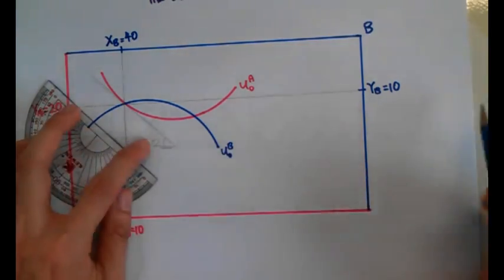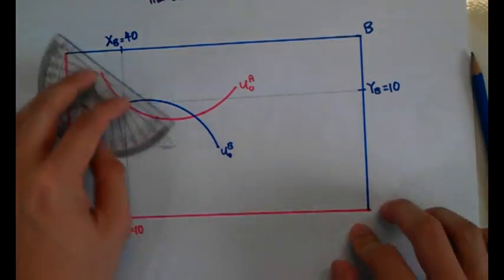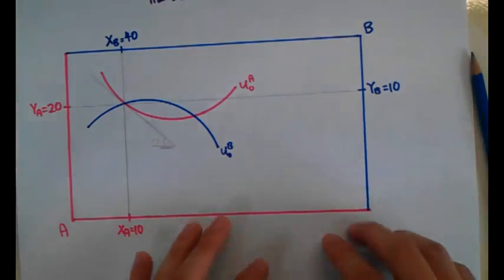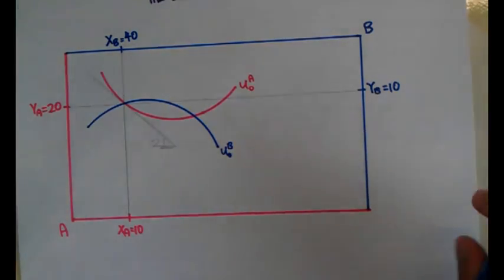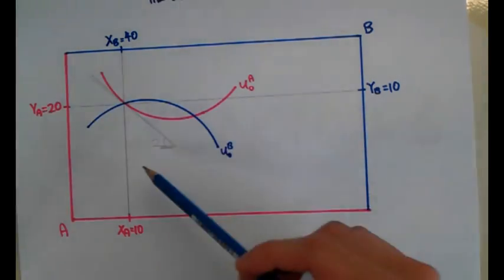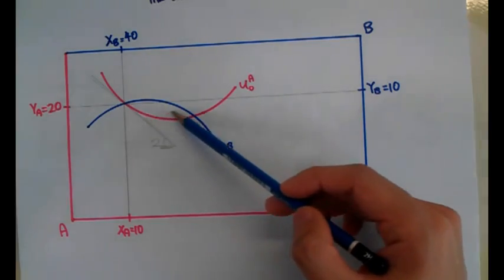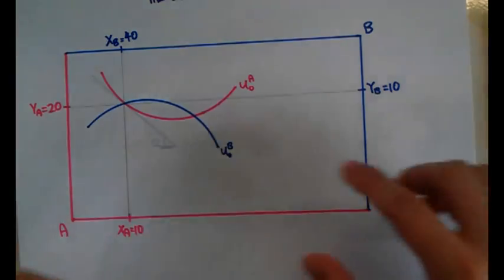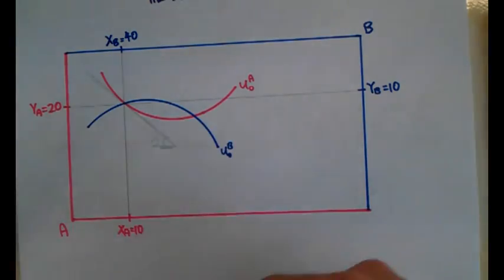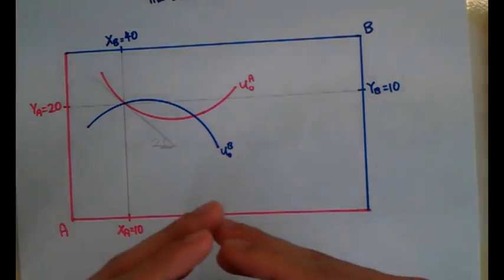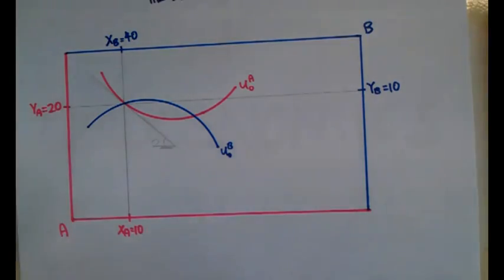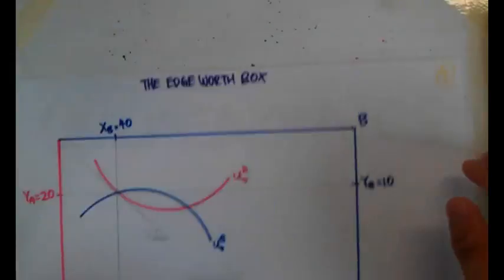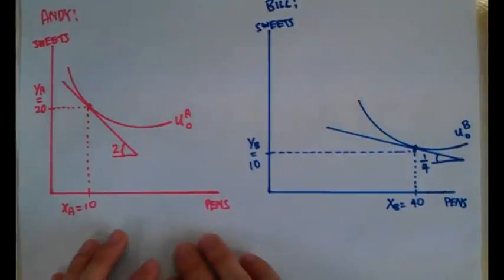We know that this price line is 2, and it will be the same for Bill's side as well. You will notice that these two indifference curves form a little eye in the middle — it looks like a fish. Every time there's a fish there, it just means that both parties, by trading, can make each other better off.